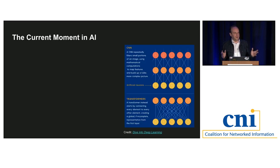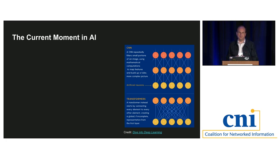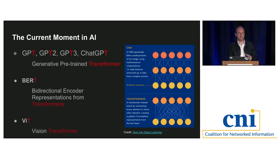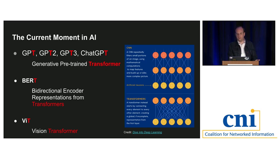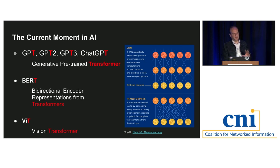The current moment in AI is impossible to discuss without talking about transformers. The math is above my head, but one interesting thing is how often this initial gets used — it's part of GPT, ChatGPT, BERT, vision transformers, and many other cryptic acronyms. Transformers represent the next evolution in network architectures, moving away from recurrent neural networks and convolutional neural networks, and trying to pay attention to many things at once.